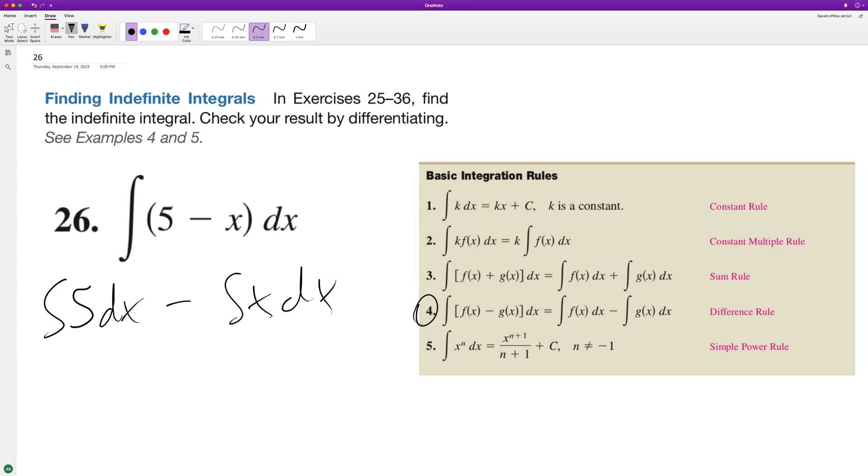So with 5dx, we just have a 5 with an x raised to the 0 plus 1, because anything raised to the 0 is just 1, so that's why there's no variable there. And then we have 0 plus 1 underneath, and then minus, and then the integral of x is 1 plus 1 over 1 plus 1.